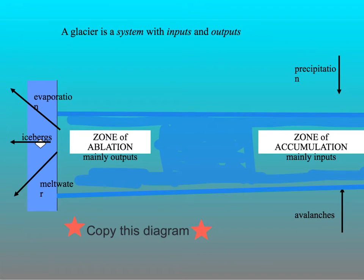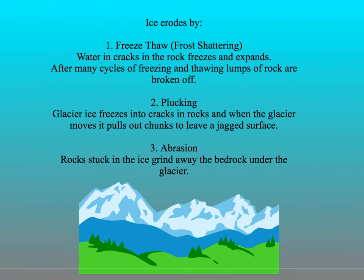I'd like you to copy this diagram down. The glacier needs input, so your precipitation is your snow, and avalanches which add snow onto the different layers. And then as the glacier moves, you've got outputs through evaporation, icebergs breaking off the front of the glacier, and meltwater where the glacier begins to melt. In the zone of accumulation and the zone of flow, different processes occur: frost-shattering, plucking, and abrasion, which erode away the landscape of the glacier.